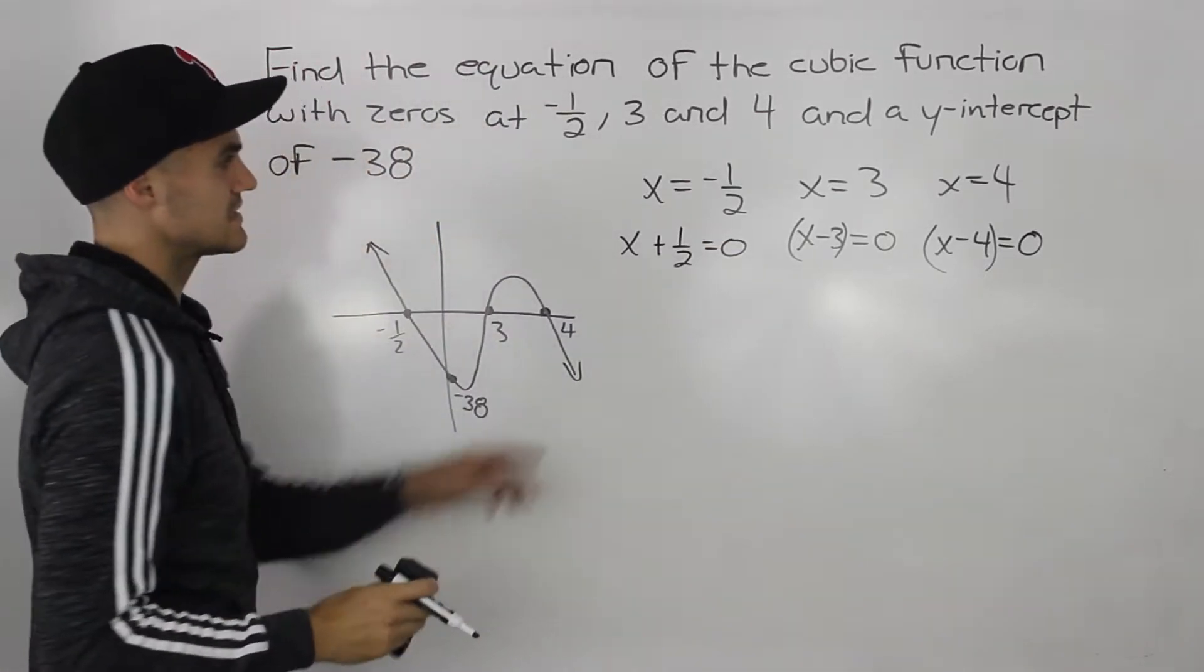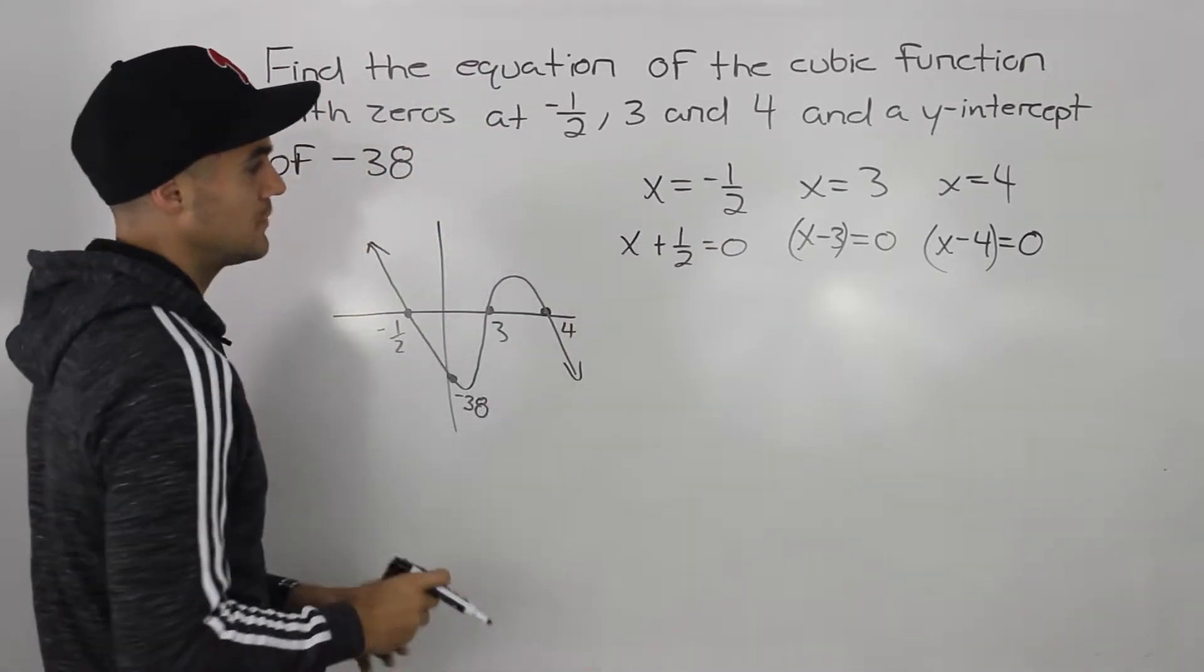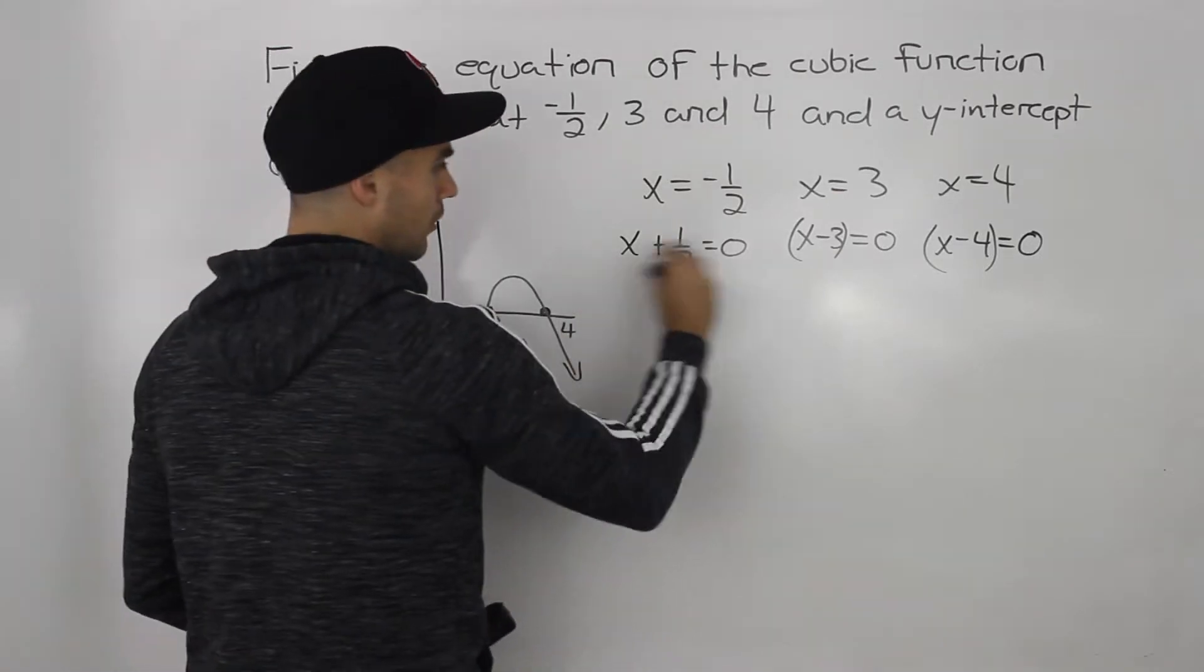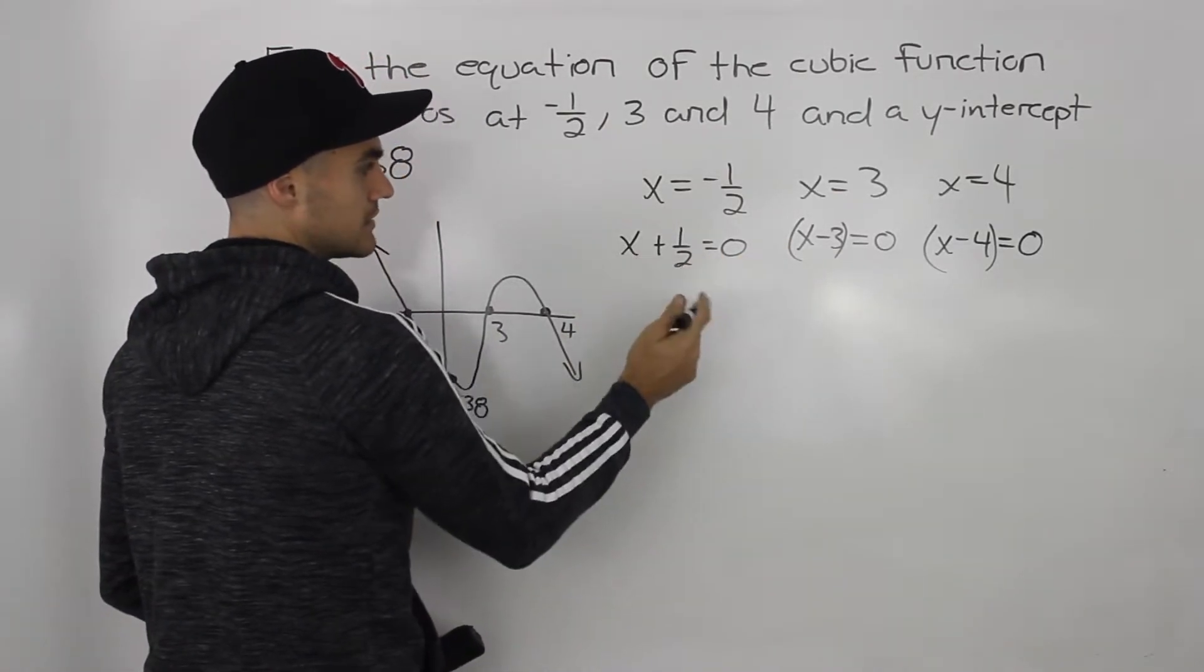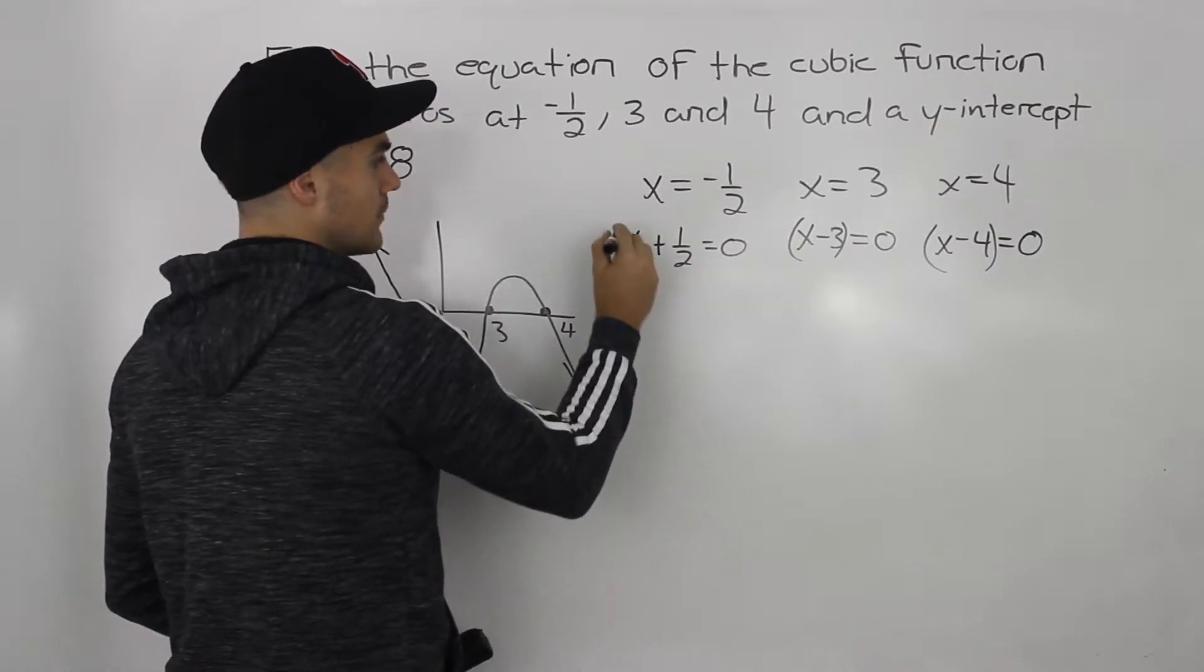However, notice that this is sort of ugly, we don't want it in this form. So what we can do is we can multiply everything in this equation by two to get rid of that denominator two.